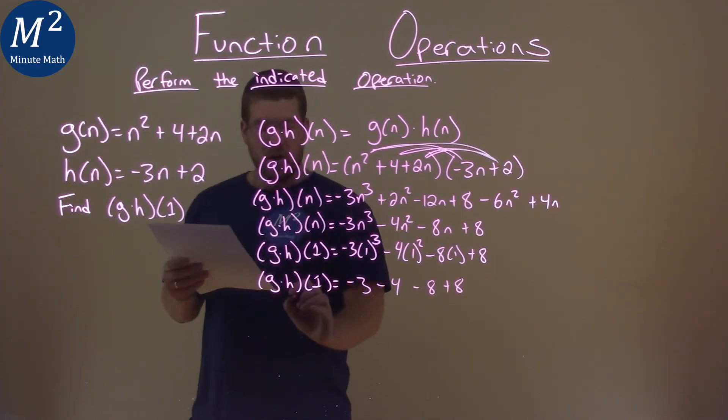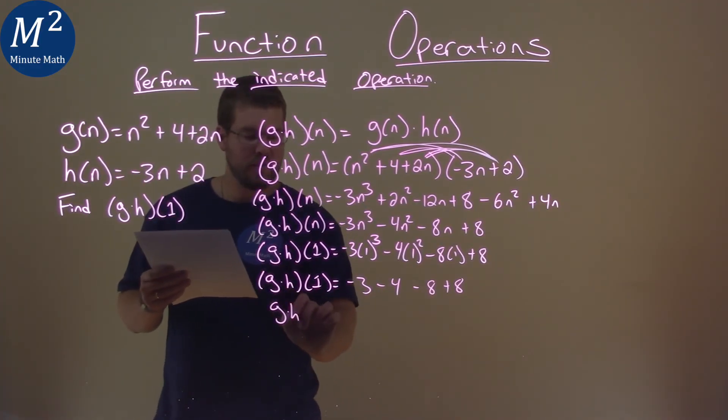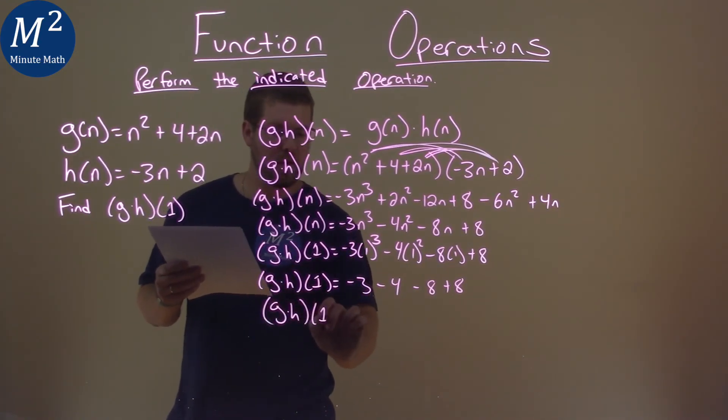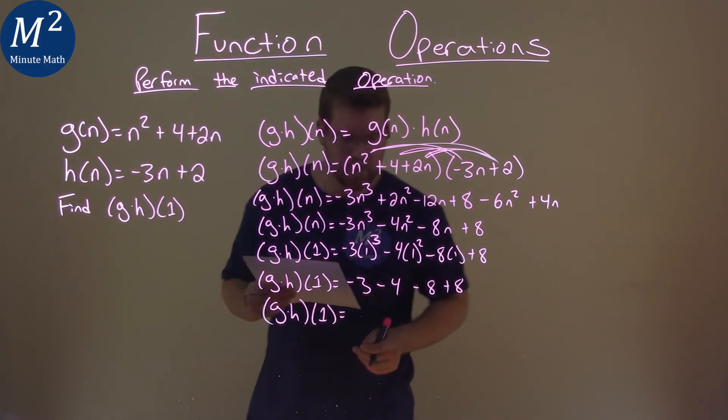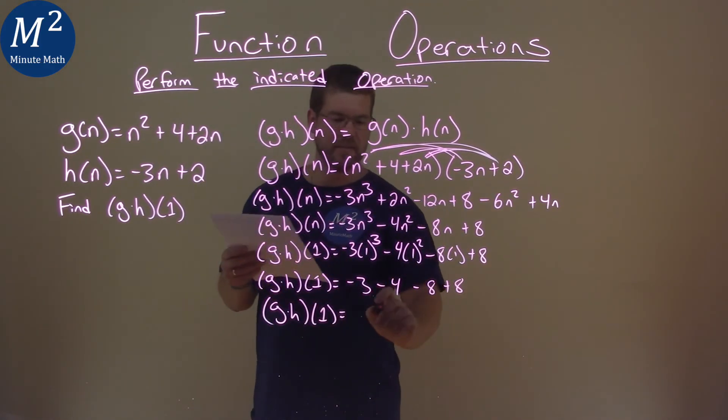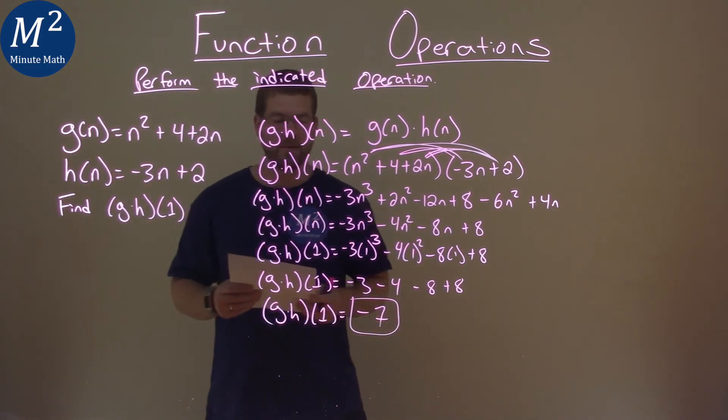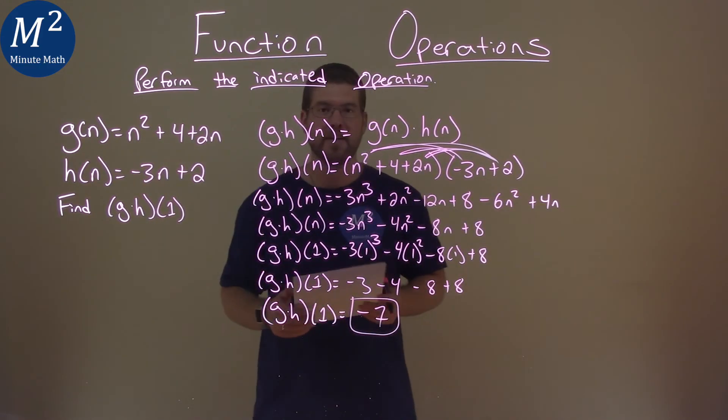We can add all this together so g times h of 1, negative 3 minus 4 minus 8 plus 8 is negative 7. And so after all this our final answer here is negative 7.